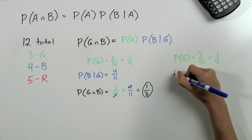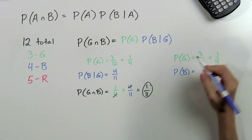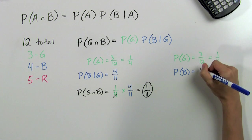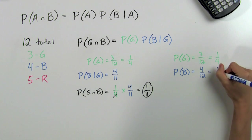But the probability of pulling a blue marble would now be four over twelve, so four twelfths, which can be reduced down to one-third.